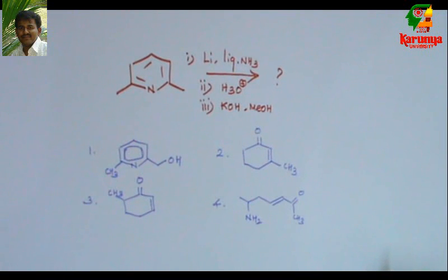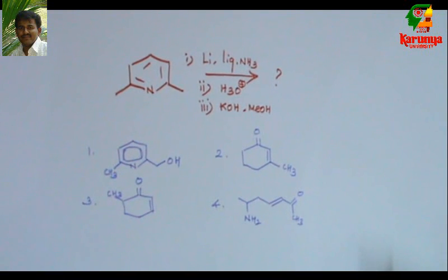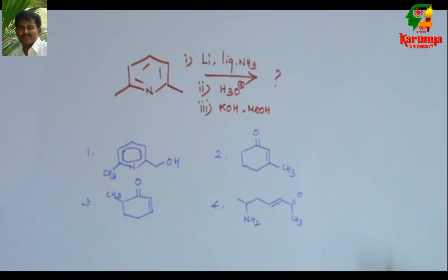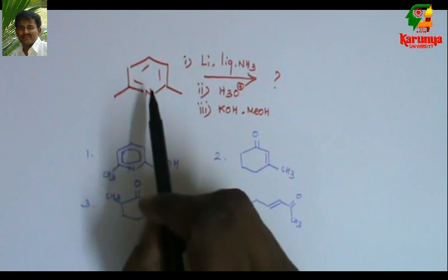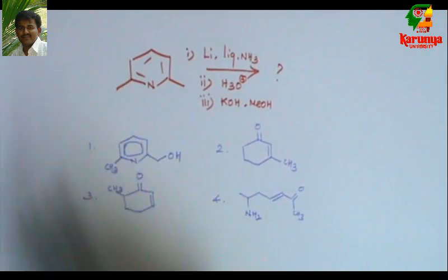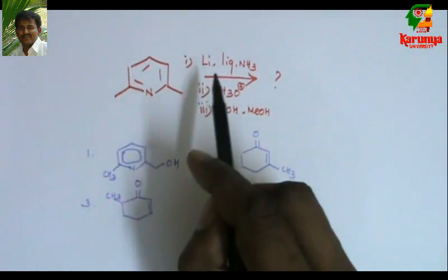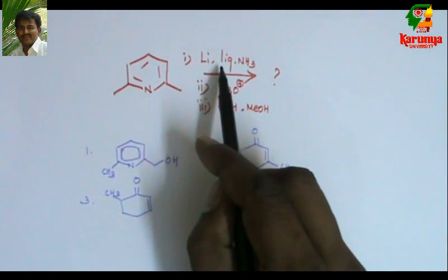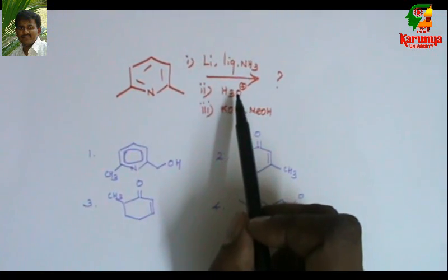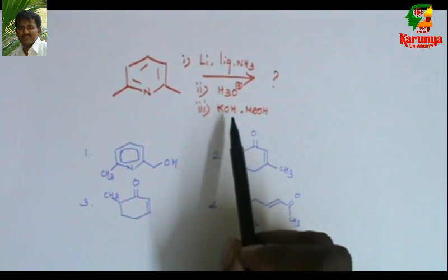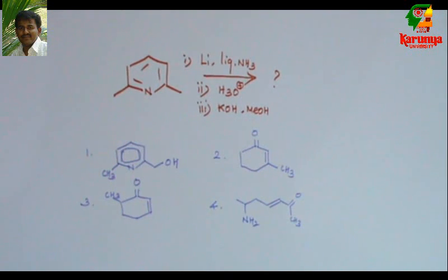Today I am going to solve a problem on Birch reduction. You can find this problem in CSIR NET exam 2012. Here is the problem: when 2,6-dimethylpyridine is subjected to Birch conditions — that is, lithium in liquid ammonia — followed by hydrolysis, then treatment with KOH, what is the product?